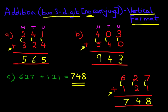And that is how we add two three-digit numbers with no carrying using the vertical format.